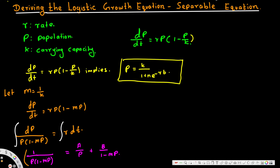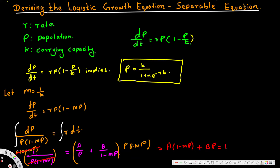Multiply both sides by p·(1 minus mp). On the right side, p cancels in the first term giving A·(1 minus mp), and (1 minus mp) cancels in the second term giving B·p. So we have A·(1 minus mp) plus B·p equals 1.